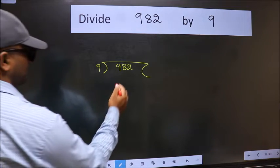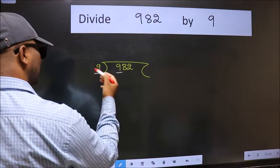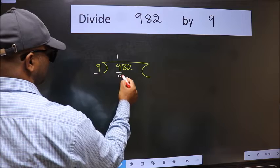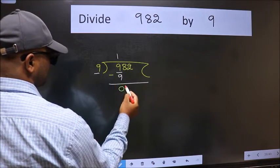Next. Here we have 9 and here 9. When do we get 9 in 9 table? 9 once 9. Now we should subtract. We get 0.